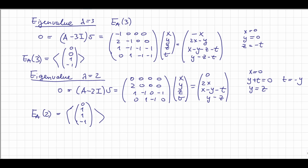We now have three eigenspaces, each a line, giving total dimension 3. But the total space has dimension 4, so the answer is that there is no eigenvector basis. This is a complete solution for determining eigenvalues, eigenvectors, and eigenspaces of a 4 by 4 matrix.